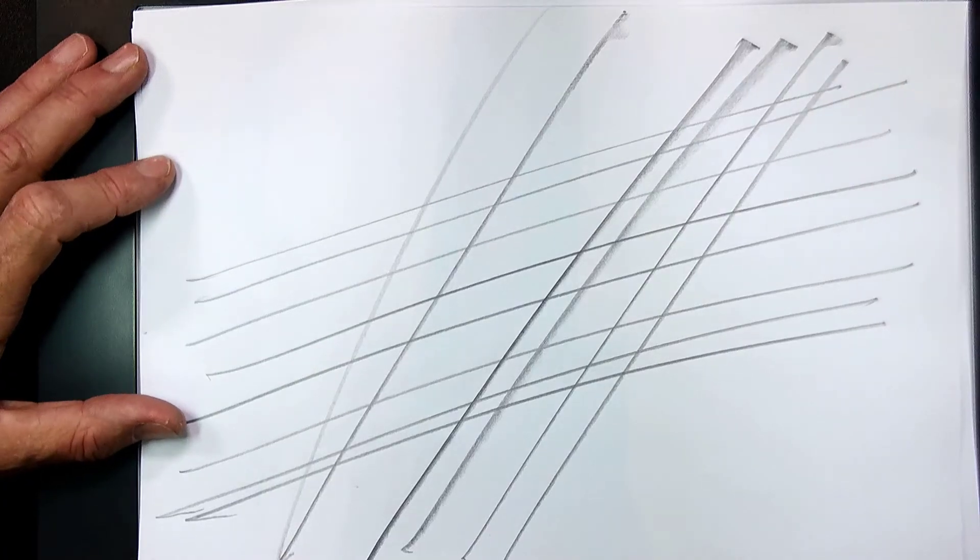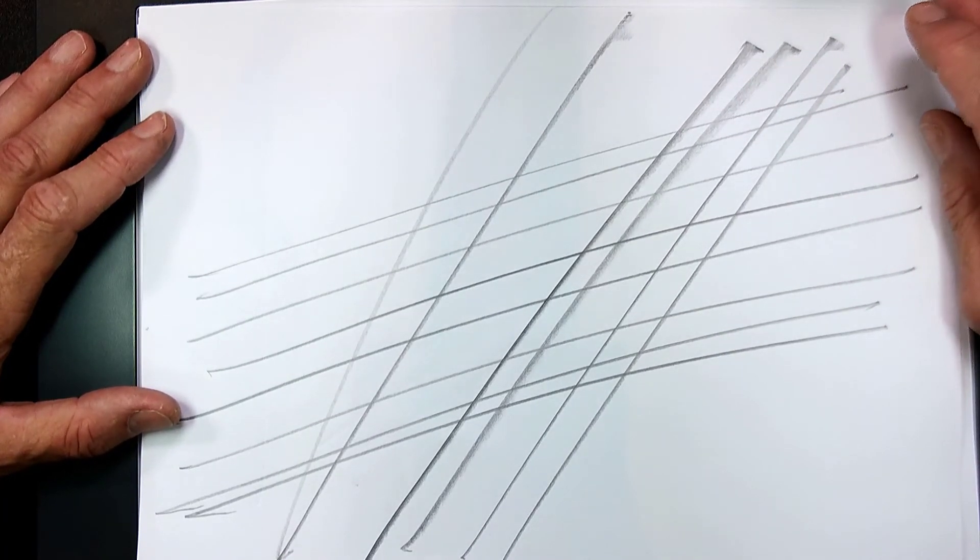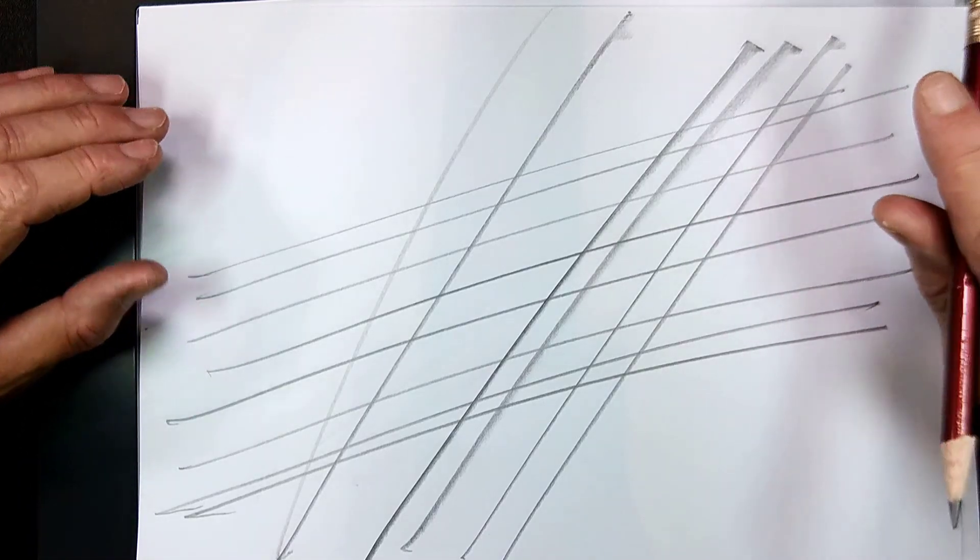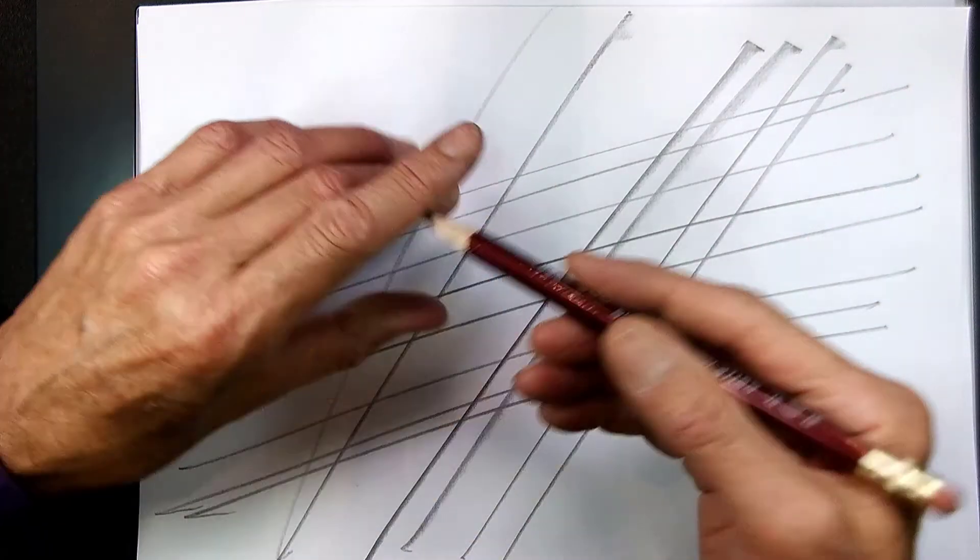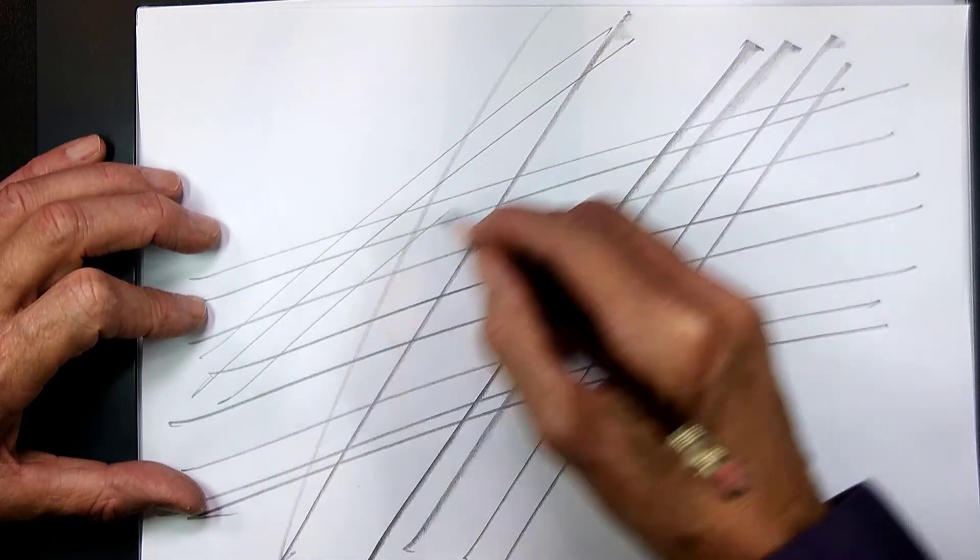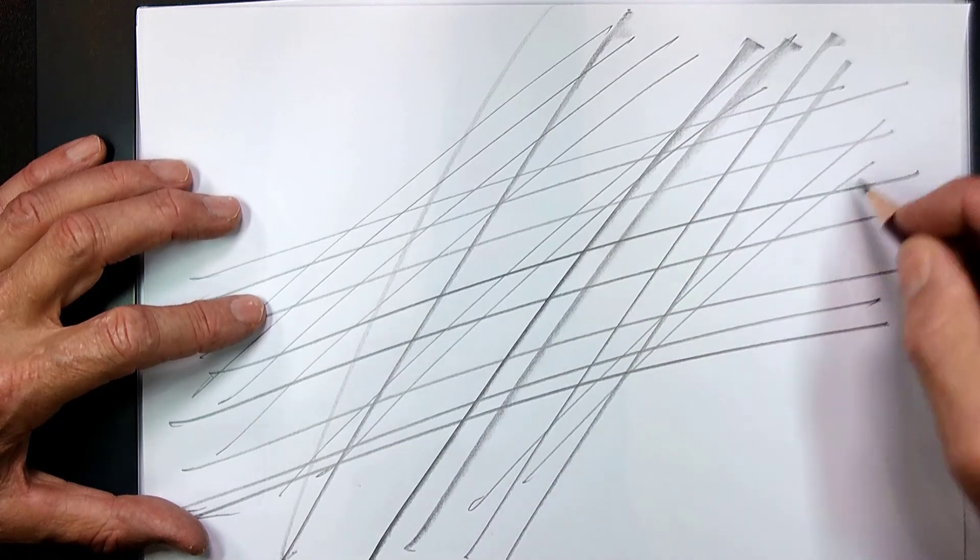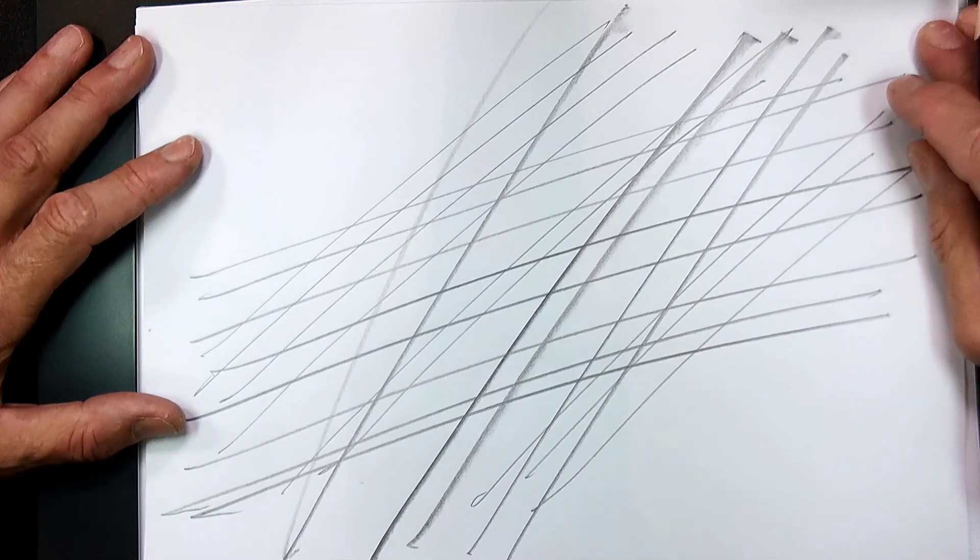So I want to very briefly summarize what we've done in this video. I've given you an introduction. I told you the two objectives of freehand sketching. I've shown you how to hold a pencil, how to make straight parallel lines, and practice before the next video.